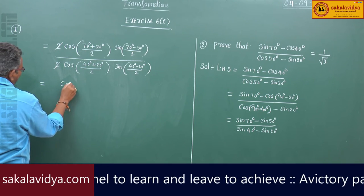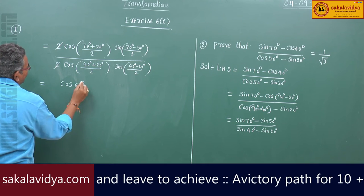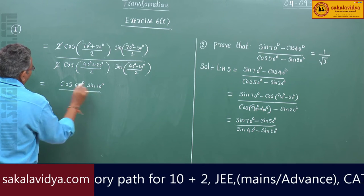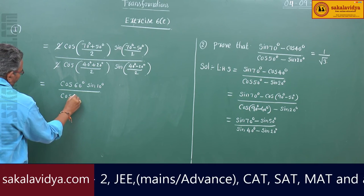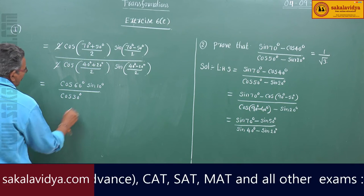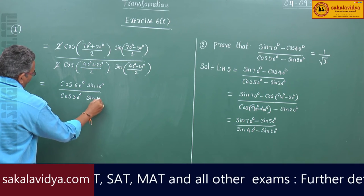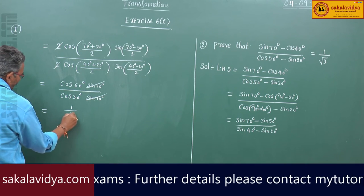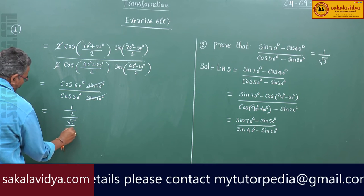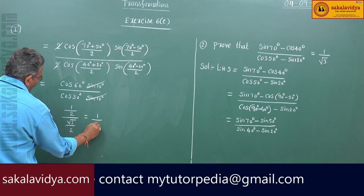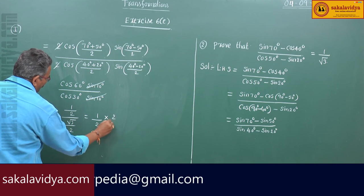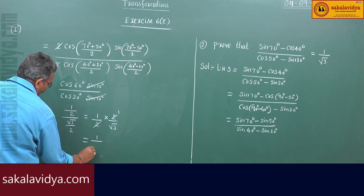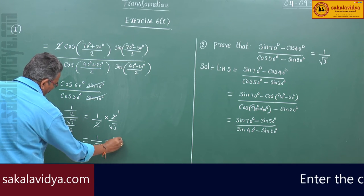This gives cos60° divided by cos30°, with the sin10° terms cancelling. Since cos60° = 1/2 and cos30° = √3/2, we get (1/2) multiplied by (2/√3), giving 1/√3, which is the RHS.